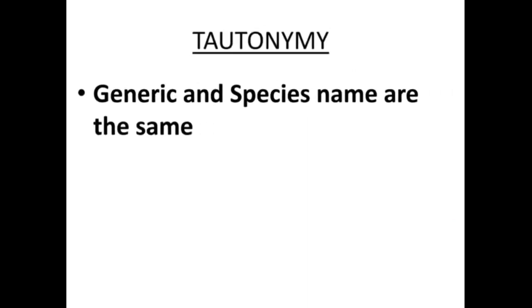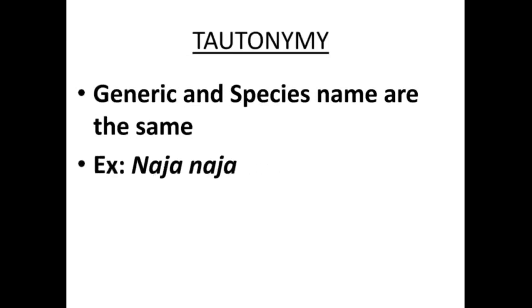Next topic is tautonymy. Tautonymy means both the genus and species names are the same. For example, Naja naja — it is the Indian cobra. Another example is Rattus rattus.